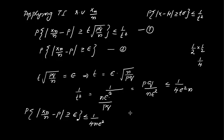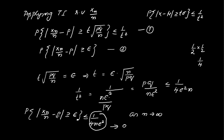As n tends to infinity, the denominator goes to infinity and the term 1/(4n·epsilon²) tends to zero. Therefore, the probability of the modulus of XN/n minus p greater than or equal to epsilon tends to zero as n tends to infinity. Thus Bernoulli's Law of Large Numbers is proved.